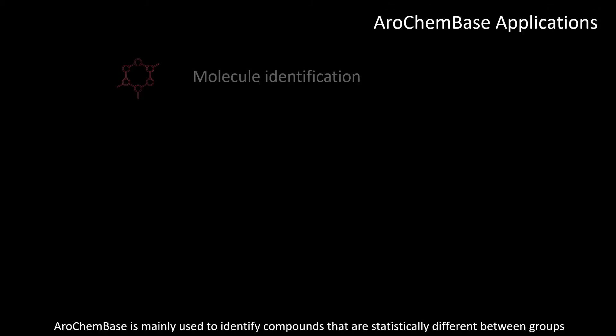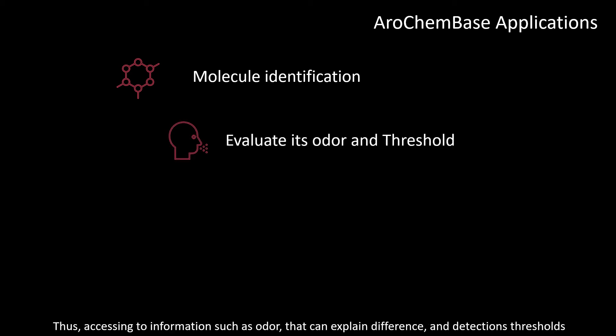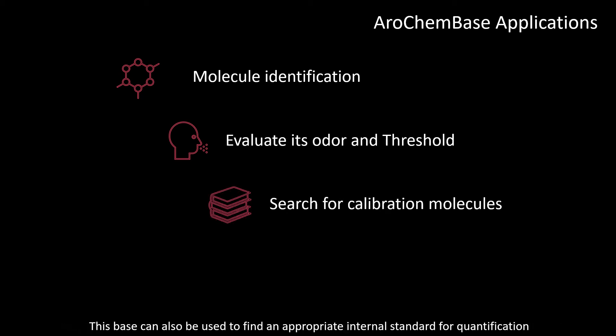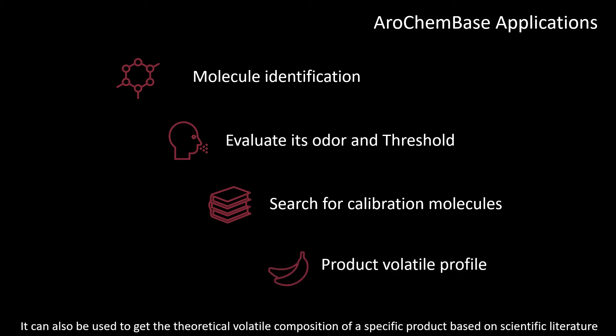The Kovats index is mainly used to identify compounds that are statistically different between groups, accessing information such as odors that can explain differences and detection thresholds. This database can also be used to find an appropriate internal standard for quantification. It can also be used to get the theoretical volatile composition of a specific product based on scientific literature.